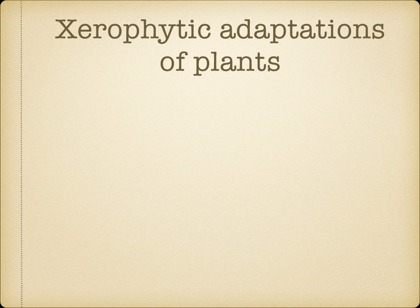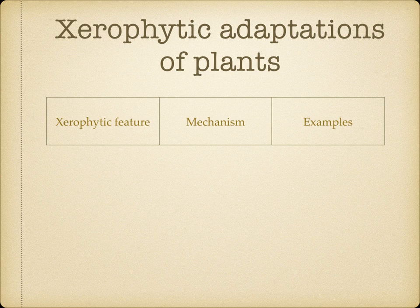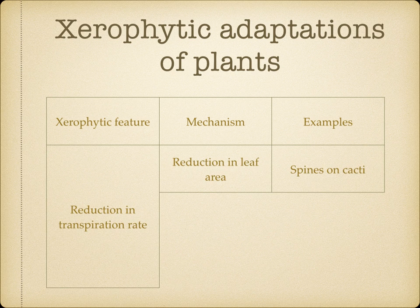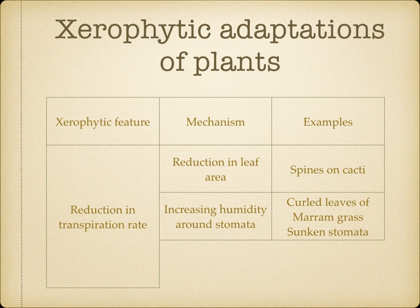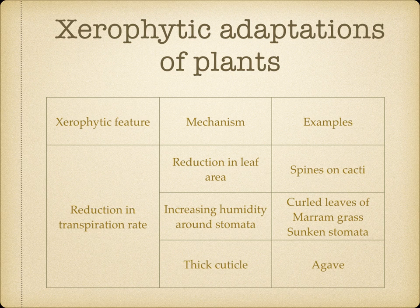When explaining adaptations of xerophytic plants to reduce water loss, always relate these adaptations to reducing the water potential gradient, and so reducing evaporation of water and transpiration. For example: a xerophytic feature such as reduction in leaf area — the mechanism being reduction in surface area, as seen with spines on cacti. Increasing the humidity around the stomata through curled leaves, as in marram grass, or sunken stomata. Or a thick cuticle, for example in the agave plant.